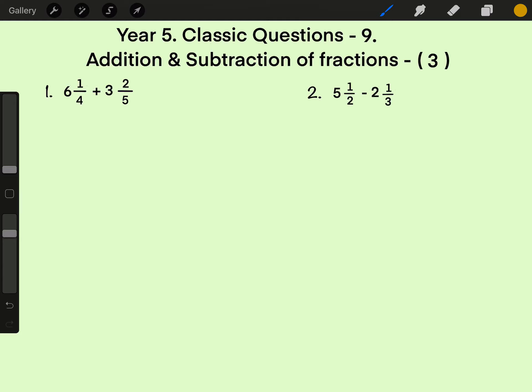Question 1: 6 and 1 quarter plus 3 and 2 fifths. Denominators are different.